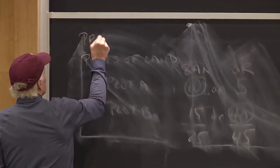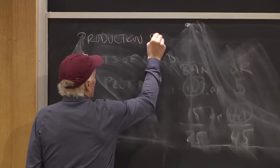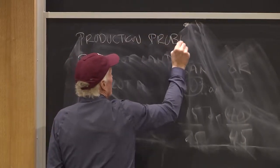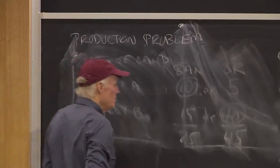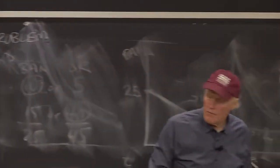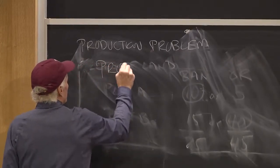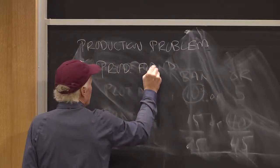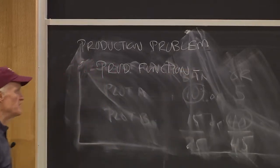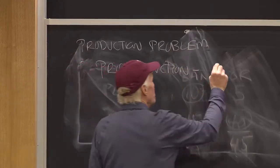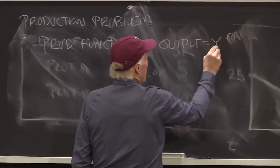We can think about a simple production problem. And my production problem, I'm going to think about what we'll call a production function. It's kind of like a utility function, but it's a little different, and we'll explain why. Production function, we'll think output, we'll call that y.